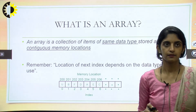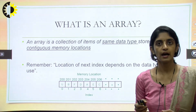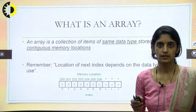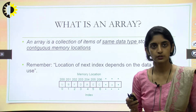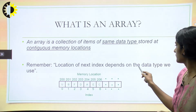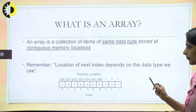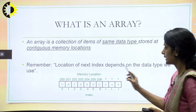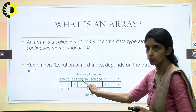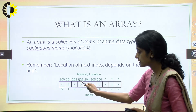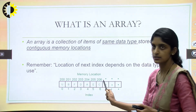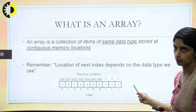What is an array? An array is a collection of items of the same data type stored in contiguous memory locations. The point to be noted is that the location of the next index depends on the data type we use. Consider memory addresses 200, 201, 202 — these are the addresses of the memory locations where we have stored the characters u, b, f, etc. in contiguous memory locations.